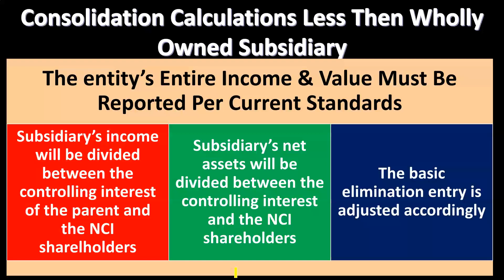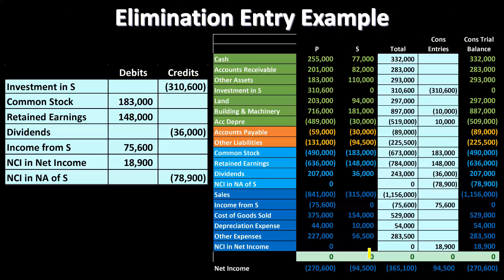The basic elimination entry is adjusted accordingly. If you have a fully owned subsidiary, the elimination entries are easier. Now we have to adjust the elimination entries to account for non-controlling interests. We're going to have two new accounts: one on the balance sheet in the equity section for the non-controlling interest, and one on the income statement acting kind of like an expense. This will make more sense when we work through actual problems.